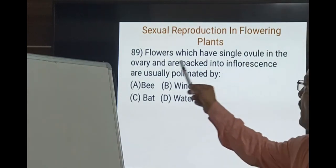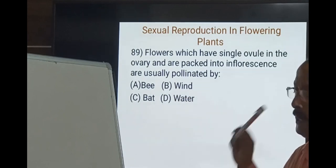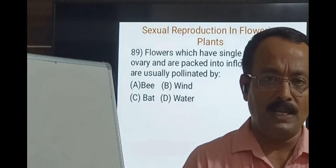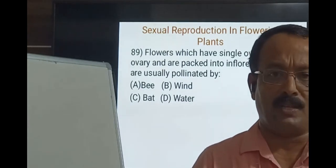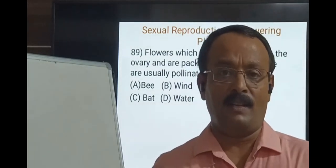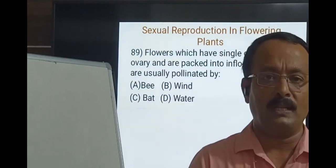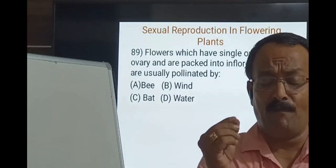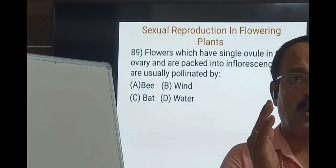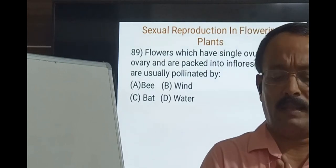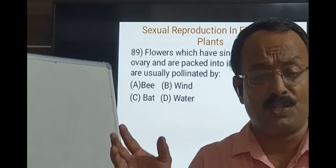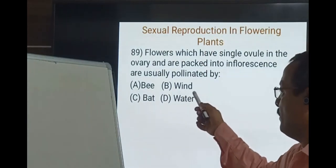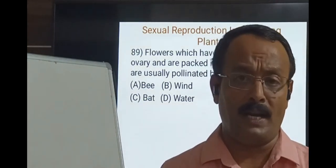Question 89: Flowers which have a single ovule in the ovary and are packed into an inflorescence are usually pollinated by wind. In wind-pollinated plants, pollination is a chance factor and plants show several adaptations: pollen grains are very light and non-sticky, small and tiny flowers with a single ovule are packed to form an inflorescence, and they have feathery stamens and stigmas well exposed to catch pollen. Wind is a major abiotic pollinating agent.